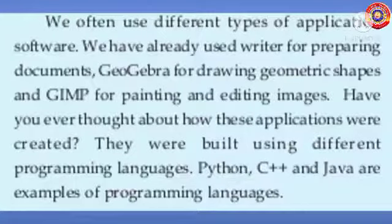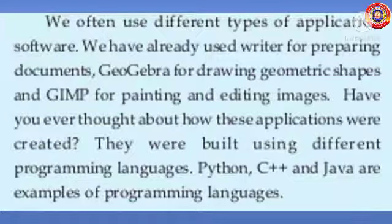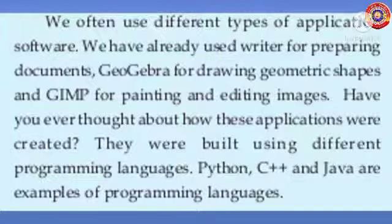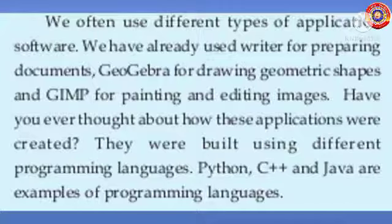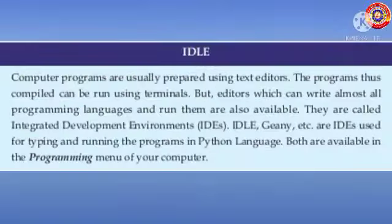Let's look at some features of Python language. We often use different types of application software — software created for a specific purpose. We have already used Writer for preparing documents, GeoGebra for drawing geometric shapes, and GIMP for painting and editing images. Have you ever thought about how these applications were created? They were built using different programming languages. Python, C++, and Java are examples of programming languages.